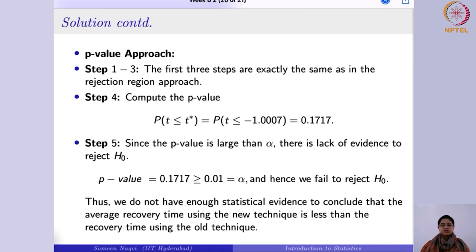To summarize: we have covered two methods of hypothesis testing — the rejection region approach and the p-value approach — applied to the single-mean test. When sigma is known the test statistic follows the standard normal (z-test); when sigma is unknown the test statistic follows the t-distribution (t-test). We also examined how the right-tailed, left-tailed, and two-tailed tests differ and how to approach such problems.